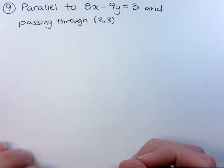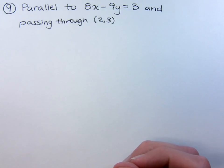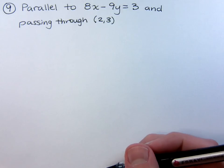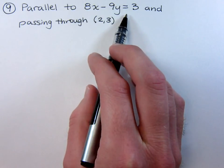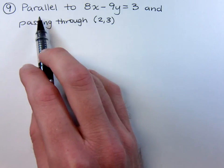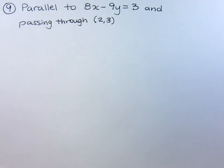In continuing our discussions with writing equations for lines, I want us to look at an example where the equation that we're starting with is given in standard form. We want to be parallel to this. As we remember, slopes for lines that are parallel must be exactly the same.